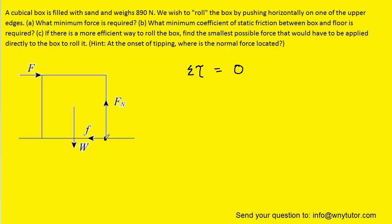We'll notice that there are two forces passing through the pivot point: the normal force and the frictional force. Because those two forces are passing through the pivot, their torques will be zero, so we can actually disregard them in the torque equation.